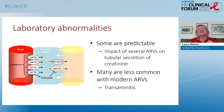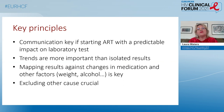On laboratory abnormalities: some are very predictable, such as the impact of several antiretrovirals on tubular secretion of creatinine, which leads to fairly predictable changes in estimated GFR. Many laboratory abnormalities that were quite common several years ago are much less common now — transaminitis is a good example. The key principles are communication: if you're starting or switching to a drug associated with creatinine elevations, make sure you communicate that to other healthcare professionals.